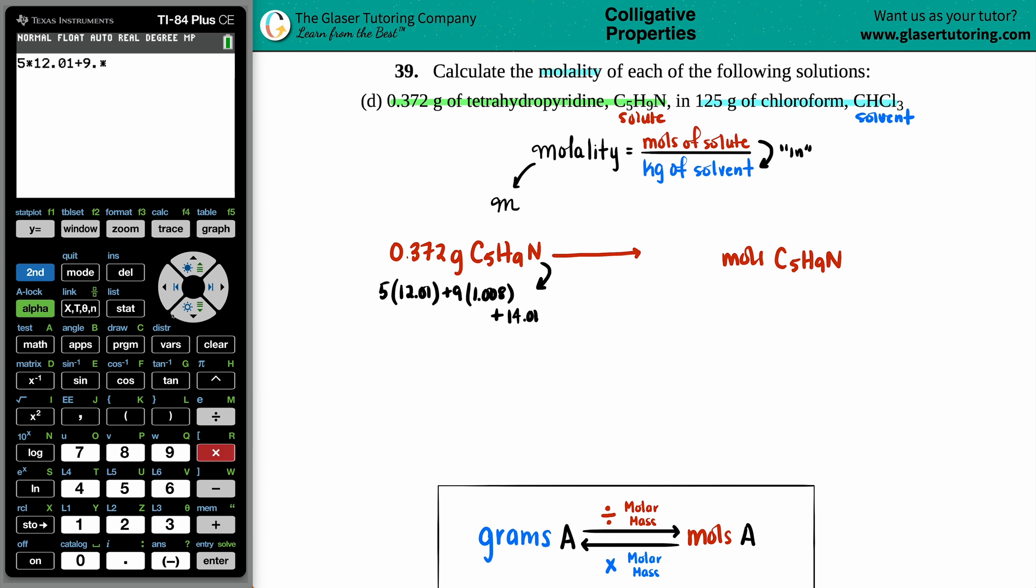Nine times—whoa, wait, what am I doing? Nine times 1.008. That looks good. Add the 14.01. And that's the molar mass, 83.134.